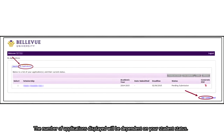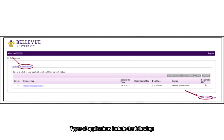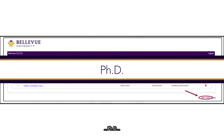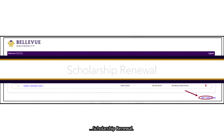The number of applications displayed will be dependent on your student status. Types of applications include the following: Undergraduate or Graduate, PhD, Athletic, and Scholarship Renewal.